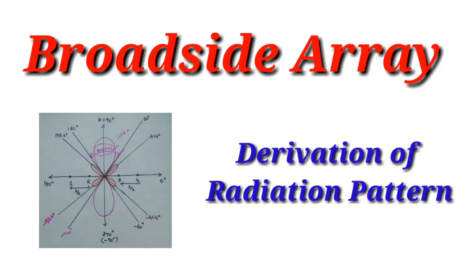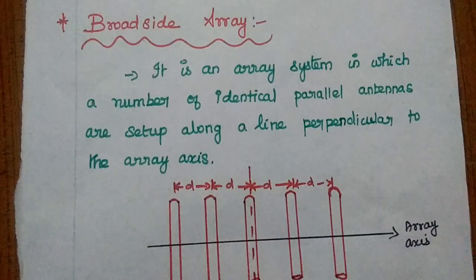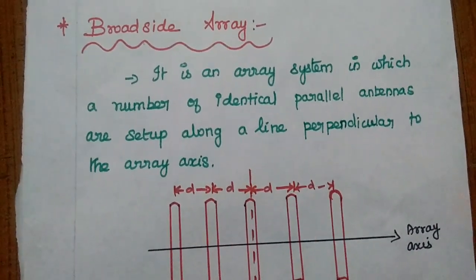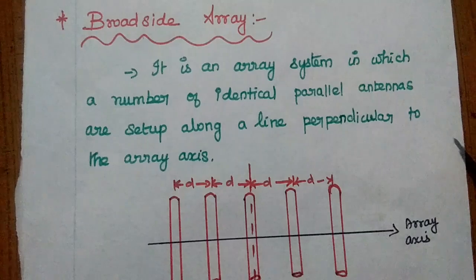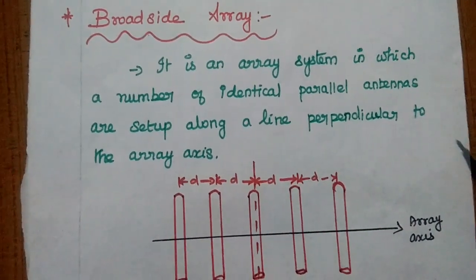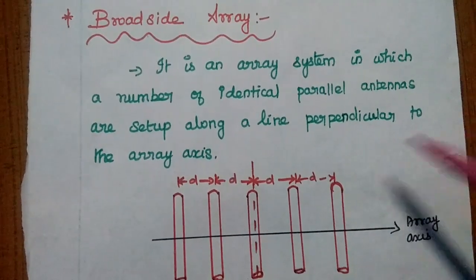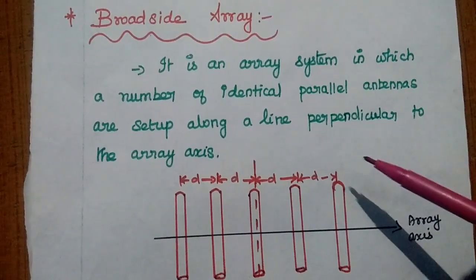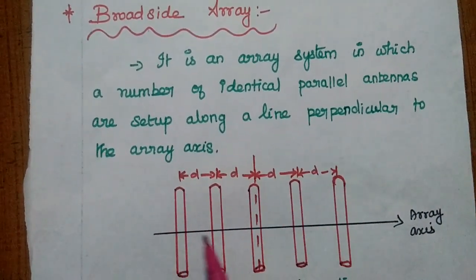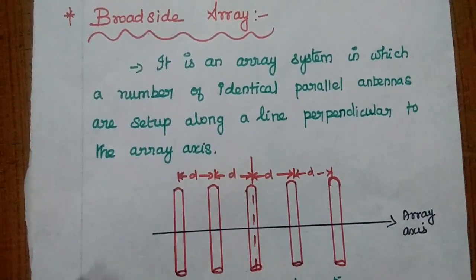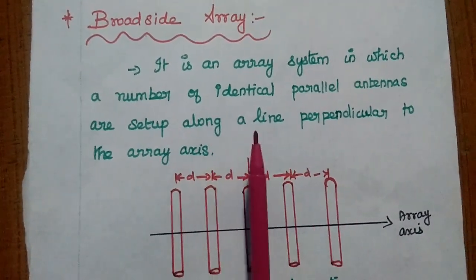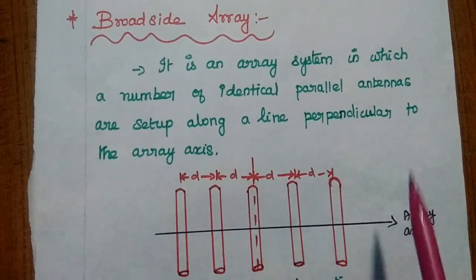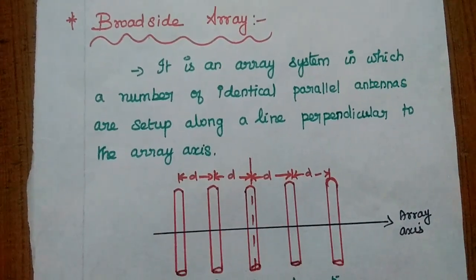We are going to discuss about broadside array and the derivation of radiation pattern. A broadside array is an array system in which a number of identical parallel antennas are set up along a line which is perpendicular to the array axis. This is the array axis, and we place the identical parallel antennas like this — this is the arrangement of the broadside array.